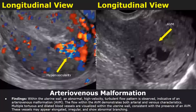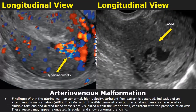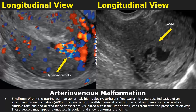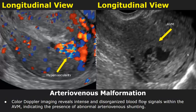Here is a case of arteriovenous malformation. Within the uterine wall, an abnormal high-velocity turbulent flow pattern is observed indicative of an arteriovenous malformation. The flow within the AVM demonstrates both arterial and venous characteristics. Multiple tortuous and dilated blood vessels are visualized within the uterine wall consistent with the presence of an AVM. Color Doppler imaging reveals intense and disorganized blood flow signals within the AVM indicating abnormal arteriovenous shunting.